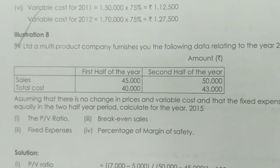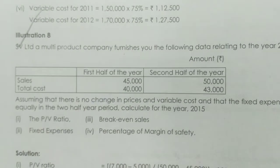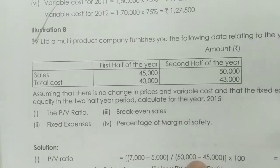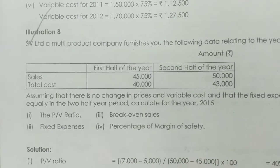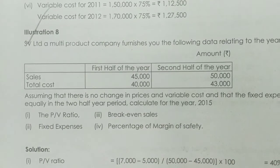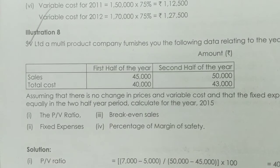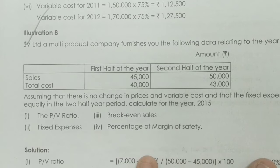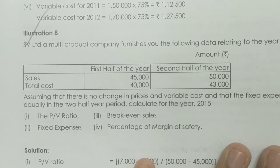Aswell Limited, a multi-product company, furnishes you the following data relating to the year 2050. This is the first half of the year and the second half of the year with the total cost. Assuming that there is no change in prices and variable cost, and that the fixed expenses are incurred equally in the two half-year periods.